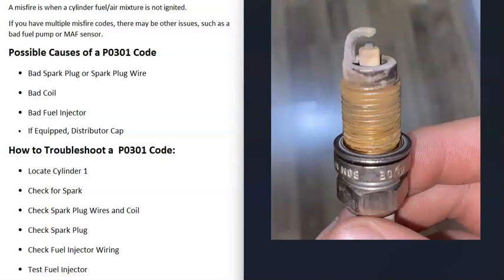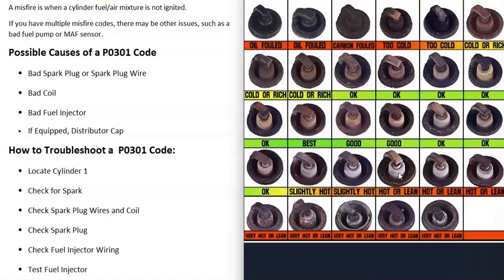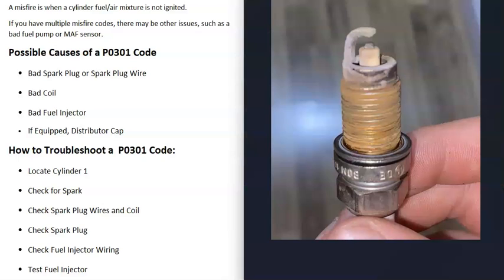After removing the spark plug, you can inspect it for damage and match it to what's called a spark plug burn chart. This tells you how the inside of that cylinder was working. For example, if it looks like it's running lean, that means not enough gas is going into the cylinder relative to air, which could point to a bad fuel injector. If it's running rich, the cylinder is getting too much gas. If it's completely fouled out, that could mean there's no spark going to that cylinder.